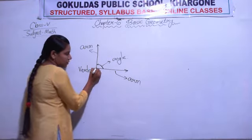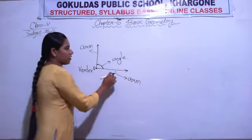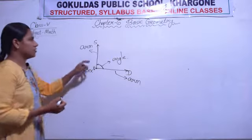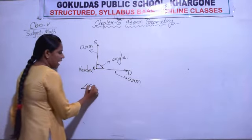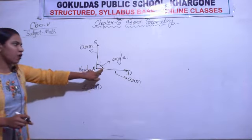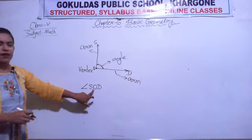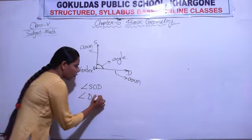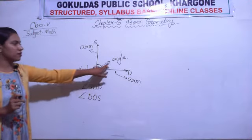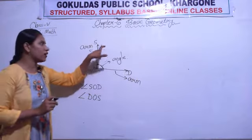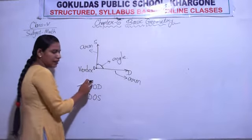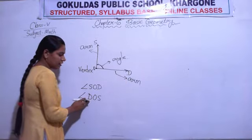If we give names to the parts: suppose the meeting point is O, one end point is D, and the other is S. So the angle is named angle S-O-D or angle D-O-S. O must be written in the center because the angle is formed at point O, not at point D or S. Both ways of writing the angle are correct.